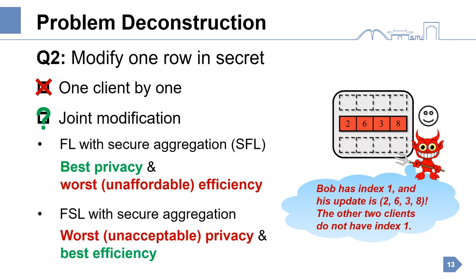Another extreme case is where a client is involved only for the rows it truly intends to modify, implying the best efficiency. However, the client can only defend against its real index set being exposed, implying the worst privacy. In addition, given the desired submodels of different clients are highly misaligned, for a certain row, the chance is high that only one client is involved in the joint modification. This probability is more than 80% in Taobao's context. The secure aggregation will no longer work, and the client's real index set will be revealed. By jointly considering these two problems, we find that SFL is the only existing solution, but incurs unavailable overhead.